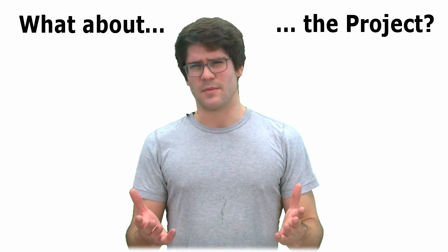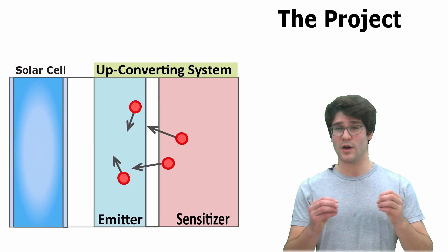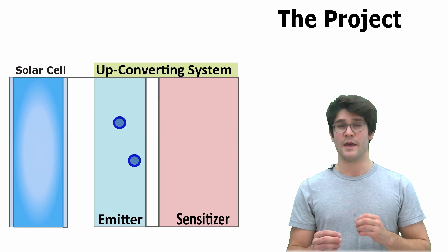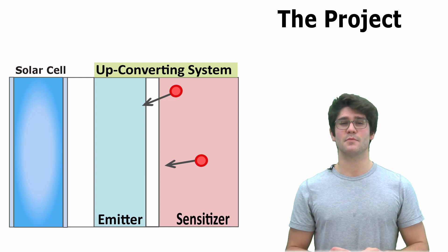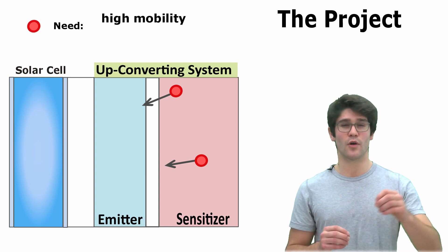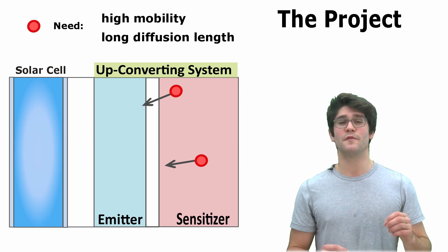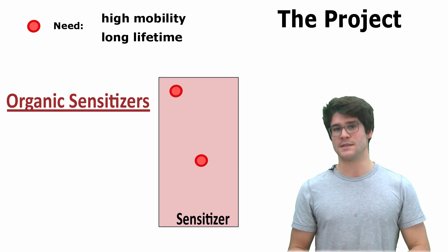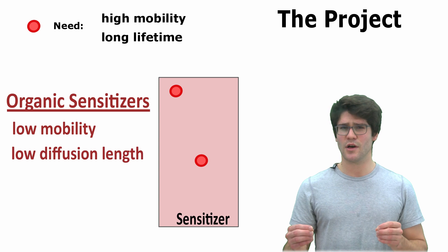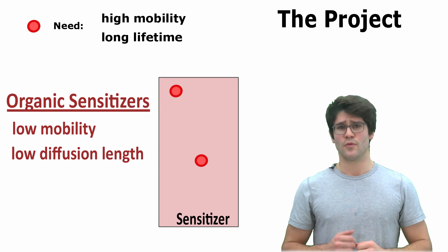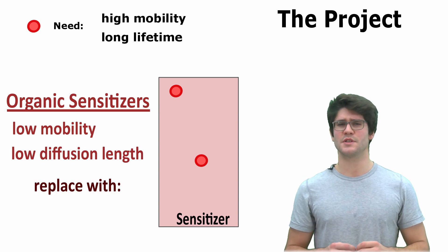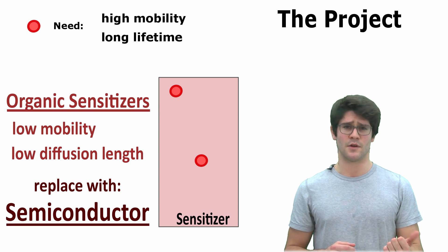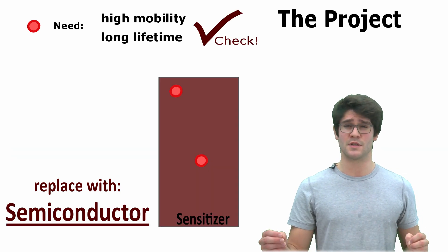So what is the project about? For upconversion to work efficiently, photo excitations must meet one another within their lifetimes. Hence, the photo excited state must be mobile, diffusing through the whole absorbing material before decaying. This is difficult to achieve in organic sensitizers, which have low diffusion lengths. We aim to replace these conventional sensitizers with something closer to a semiconductor, which have much larger diffusion lengths.